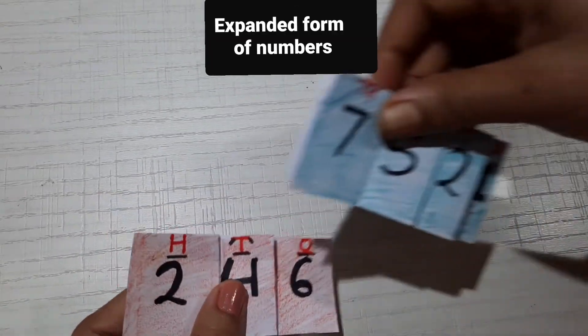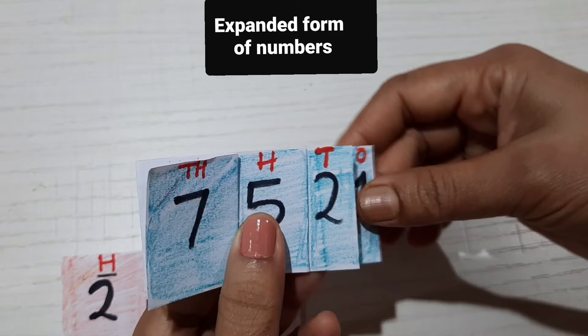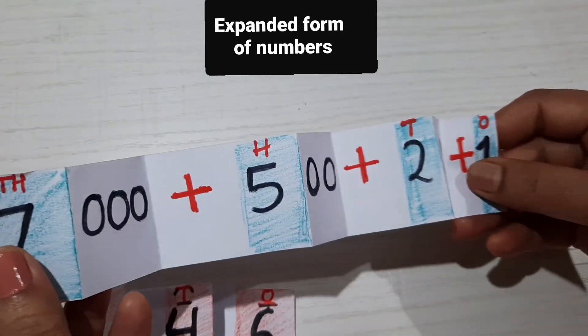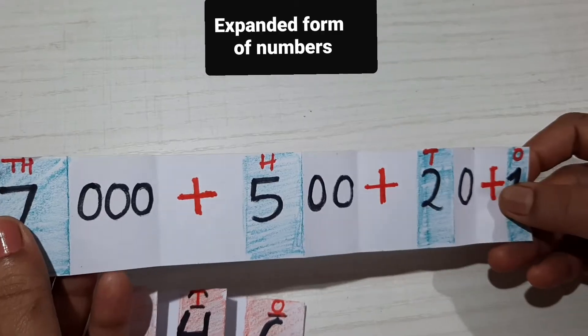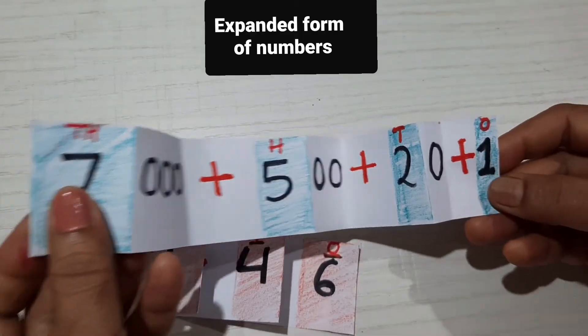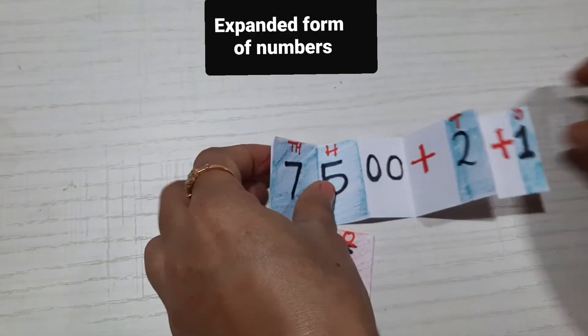Here's another one for a four-digit number. I will open the paper and it will show you the expanded form: 7000 plus 500 plus 20 plus 1. I'll show you how to do it.